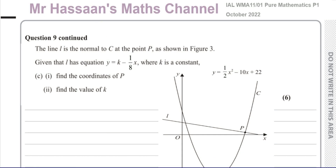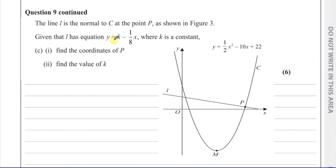This is question number 9 part C from the International A-Level Edexcel Pure Mathematics P1 October 2022 paper. Parts 9A and B are done in a separate video. Here we have part C: the line L1 is a normal to the curve C at the point P as shown in figure 3. Given that L has equation y equals k minus 1 over 8x, where k is a constant, we need to find the coordinates of P and the value of k.